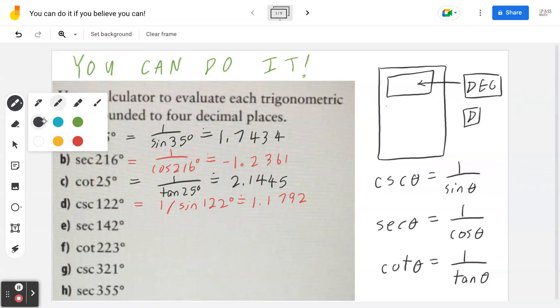For part E, secant of 142 degrees, that's 1 divided by cosine of 142 degrees. Again, if I work this out with a calculator, that's going to be negative 1.2690 approximately.